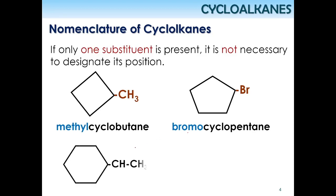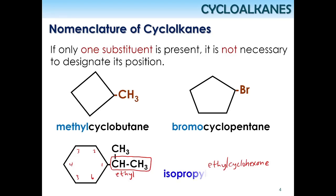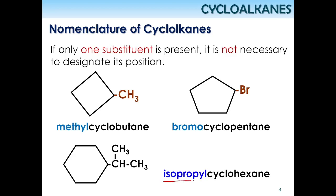For a six-carbon closed chain ring, the parent chain is cyclohexane. A two-carbon substituent is ethyl, and since only one substituent is present, we write ethylcyclohexane. But if the substituent looks like this, you need to consider the whole group — this is actually isopropyl — so the name is isopropylcyclohexane, not ethylcyclohexane.